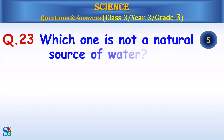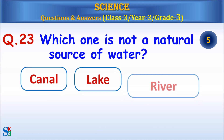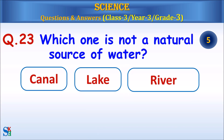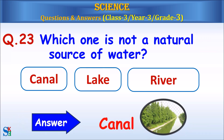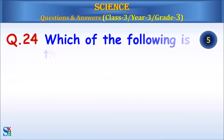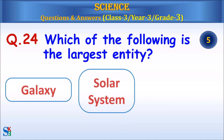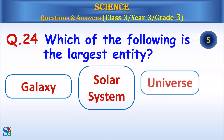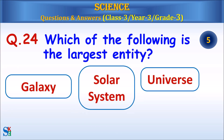Question 23: Which one is not a natural source of water — canal, lake, or river? Question 24: Which of the following is the largest entity — galaxy, solar system, or universe?